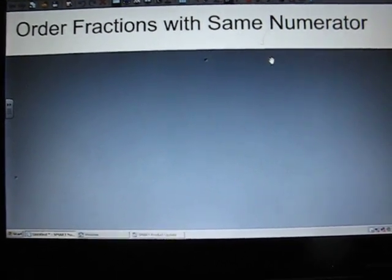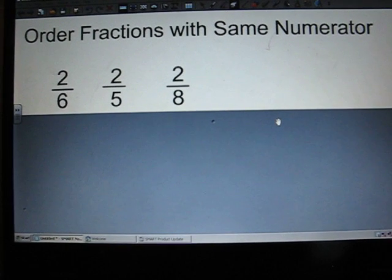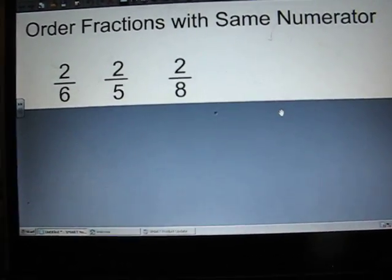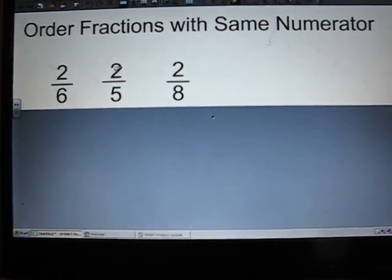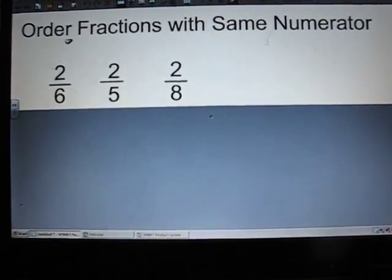So, let's take a look at it. Here we need a couple of fractions. Our fractions are two-sixths, two-fifths, and two-eighths. Notice they all have the same numerator. Two, two, two. All of them have a numerator of two.